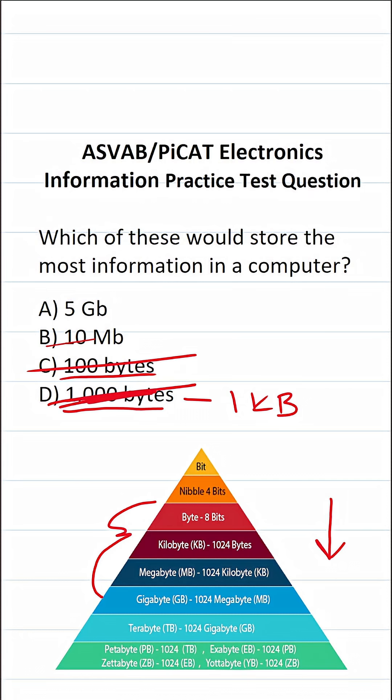There are 1,024 megabytes in 1 gigabyte. So 5 gigabytes is significantly bigger than 10 megabytes. So the answer is going to be A.